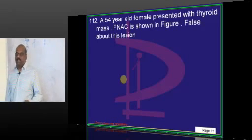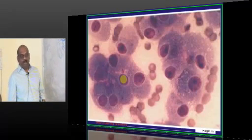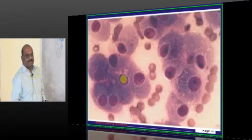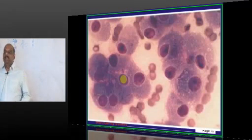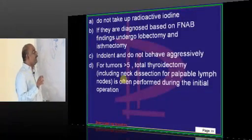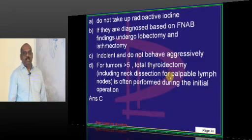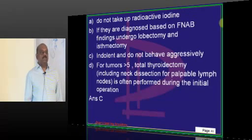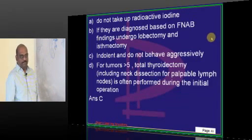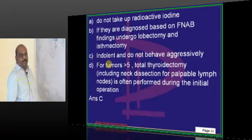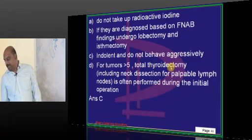A 54-year-old with a thyroid mass — you have done FNAC. What is false about this lesion? These are called Hurthle cells, and this carcinoma is called Hurthle cell carcinoma. It will poorly take up radioactive iodine and is a very aggressive tumor. You can diagnose it with FNAC alone — no need for biopsy. Based on FNAC only, you can do lobectomy and thyroidectomy. If the size of the tumor is more than 5 cm, there is an indication for total thyroidectomy.